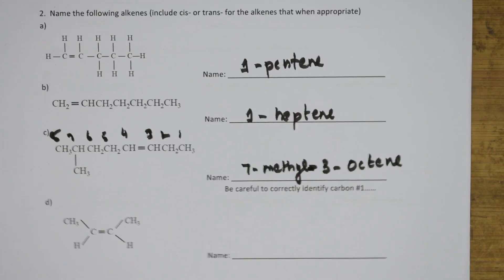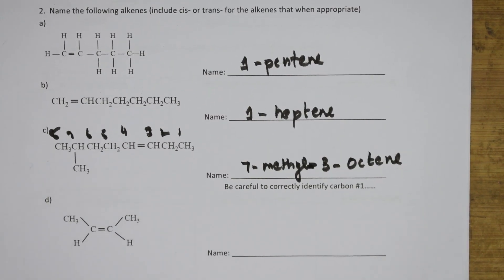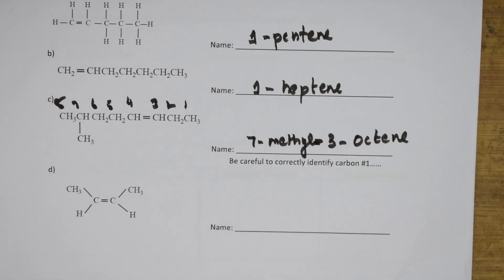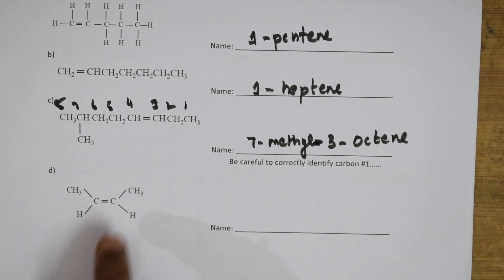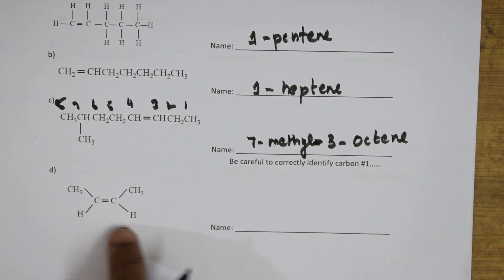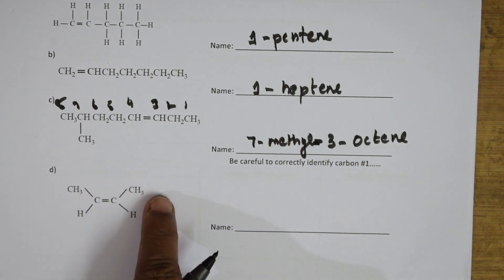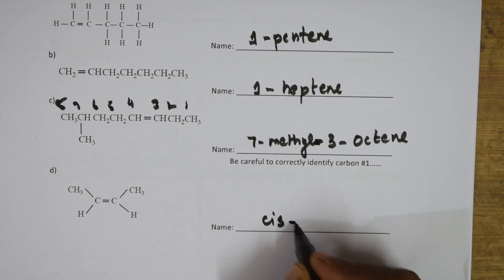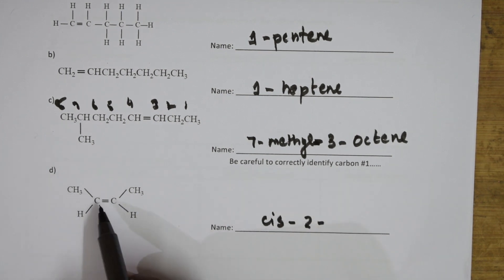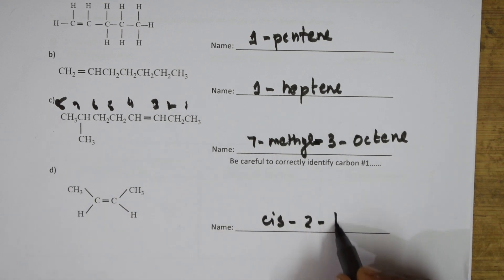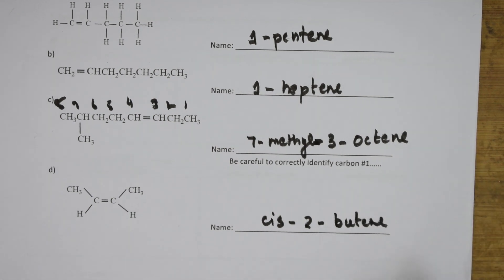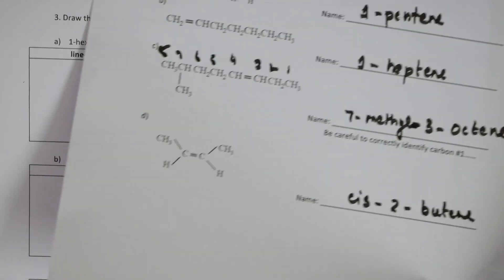Now let us come back and do the D part. Here they asked us: if there is a cis isomer, you need to mention cis. I am able to see a cis isomer because both the hydrogen atoms are on the similar side and both the methyl groups are on the similar side. Whenever you have a cis isomer, start with 'cis'. The double bond is at the second carbon and there are four carbons total, so this is cis-2-butene.